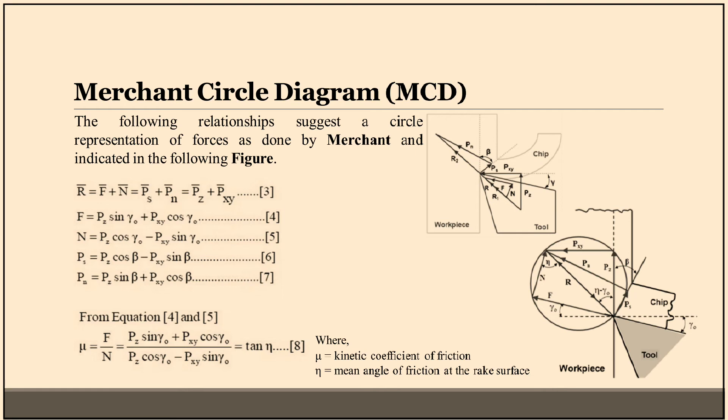This is equation eight, where mu is equal to kinetic coefficient of friction and eta is equal to mean angle of friction at the rake surface.